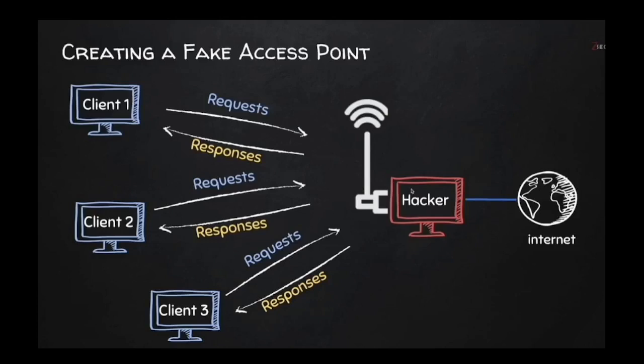There are so many attacks a hacker can carry on once they are man in the middle. For example, imagine you are traveling at an airport, waiting for your flight, and you're out of internet. While searching for a Wi-Fi network you see 'Terminal 1,' which is your current terminal, and you connect to it — not knowing it is the hacker's network. Once connected, the hacker can see all your data: credit card details if you're paying, personal information if you're filling out a form, and all chat messages being transmitted.